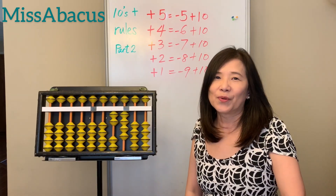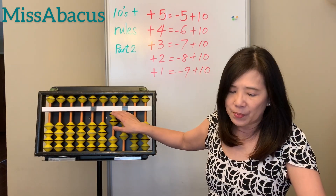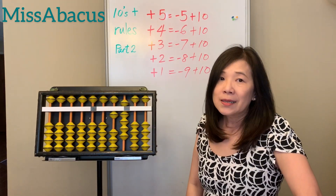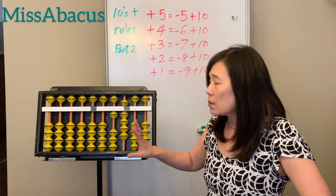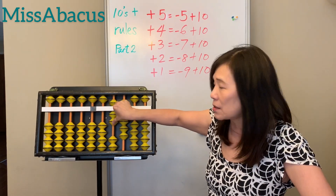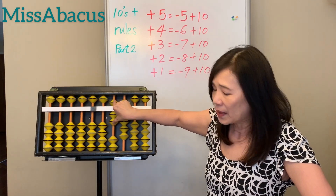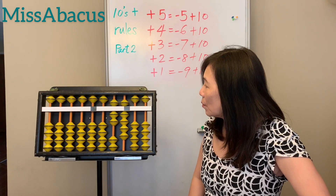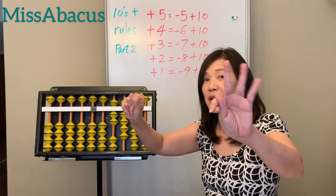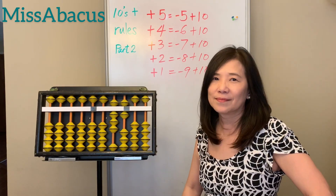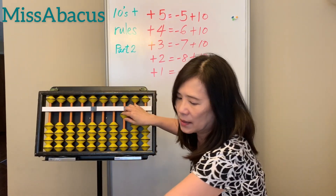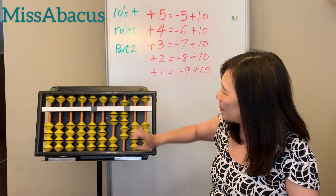So the answer is 24. That's problem one. Let's try problem 11: 19 plus 67. We do one by one from left to right. 19 — nice. Now do 67: 60 first, six on the tens place, that's 60 — five and one, total six, so 60. Then seven — what's the rule for seven? Take away three, plus ten. That's the answer: 86. Now let's do number 21: 29 minus 13.